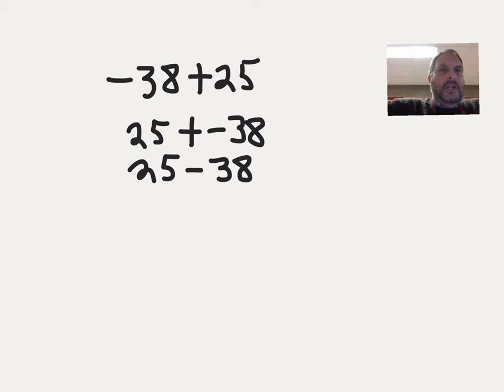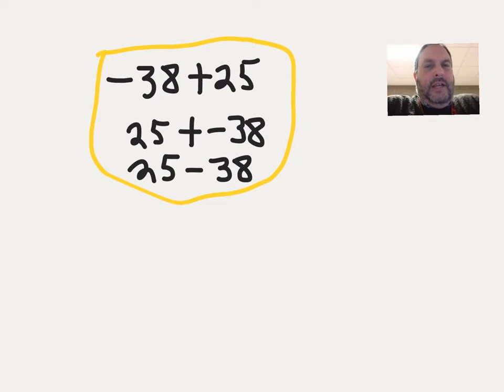I'm taking a look at this problem: negative 38 plus 25. I've rewritten it as 25 plus negative 38, and finally as 25 minus 38. Let me circle all these because even though I have three different problems here, they all say the same thing - I have this negative number 38 and I'm combining it with this positive number 25.